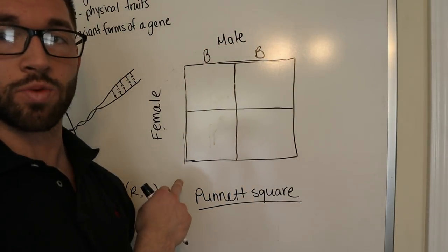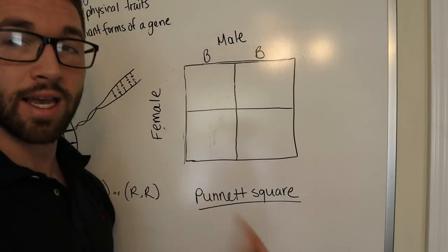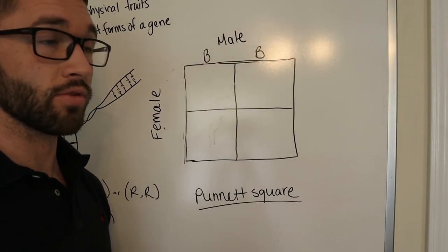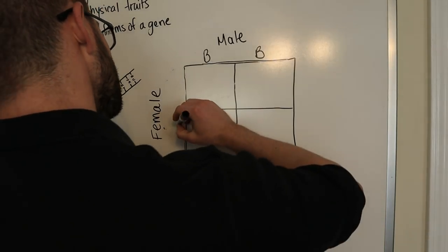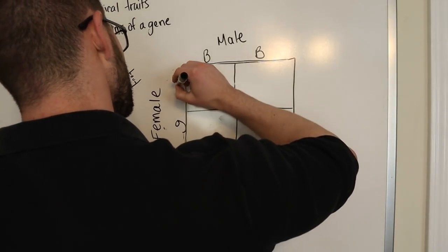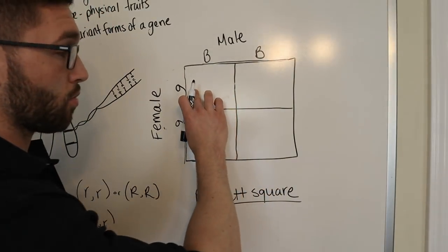The female is also homozygous, we'll say, but she's homozygous recessive for green eyes. And for recessive traits, we always write lowercase letters not to mix them up. So we'll say lowercase g, lowercase g, the same because they're homozygous.